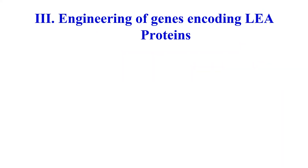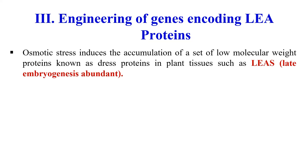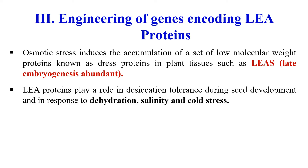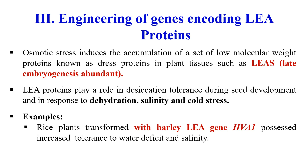The third strategy is the engineering of LEA proteins — late embryogenesis abundance proteins — which generally accumulate whenever there is stress. We can introduce the genes of these LEA proteins to improve our plants. For example, rice transformed with the barley LEA gene HVA1 showed increased resistance against water stress and salt stress.